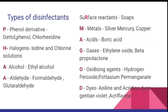G represents gases — ethylene oxide and beta-propiolactone gases are used in hospital industries, especially to sterilize equipment that cannot be sterilized by other methods. Endoscopic and bronchoscopic instruments are sterilized with the help of these gases. O represents oxidizing agents — hydrogen peroxide and potassium permanganate are very popular oxidizing agents used in hospital settings. D represents dyes — there are two types: aniline dyes and acridine dyes. An example of aniline dyes is gentian violet; acridine dyes include acriflavine, used as an antiseptic on skin as well as a disinfectant.